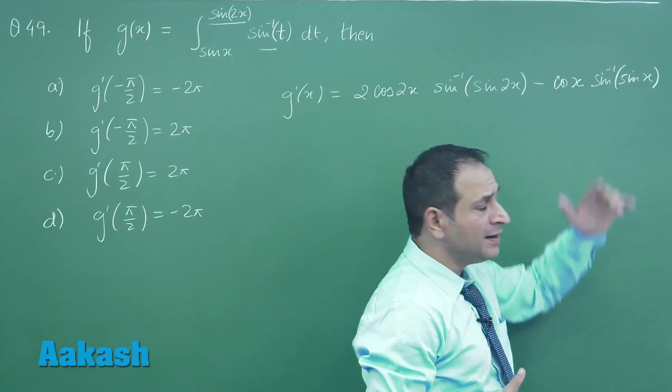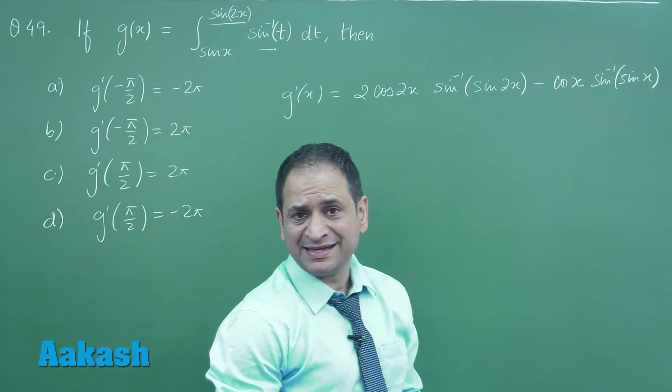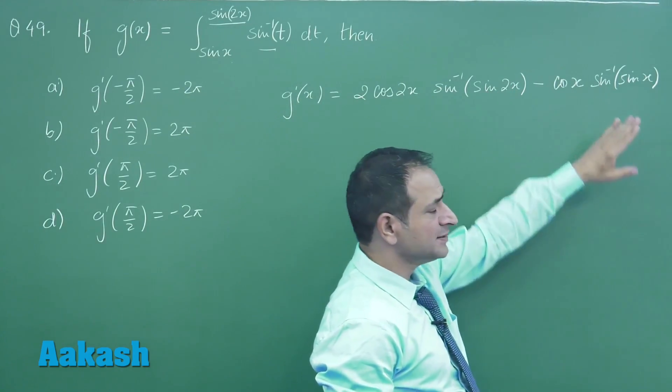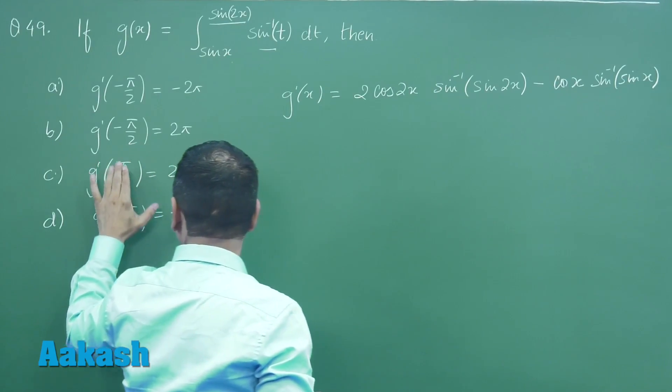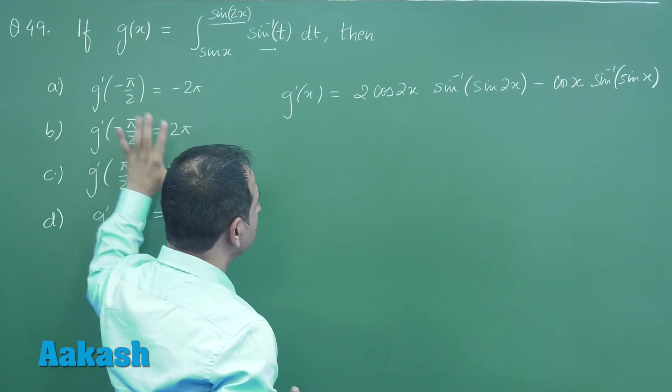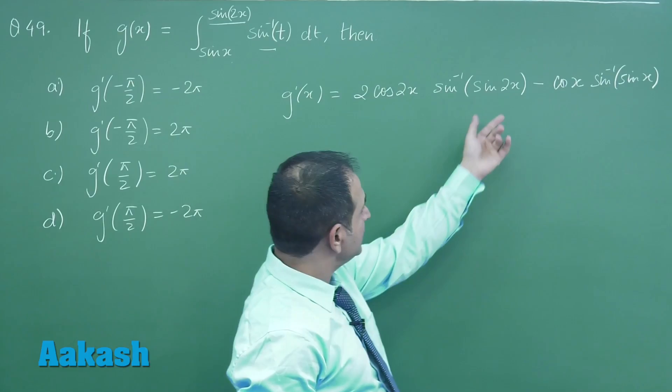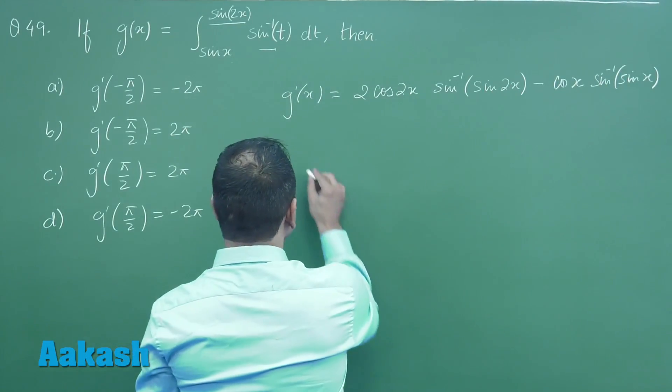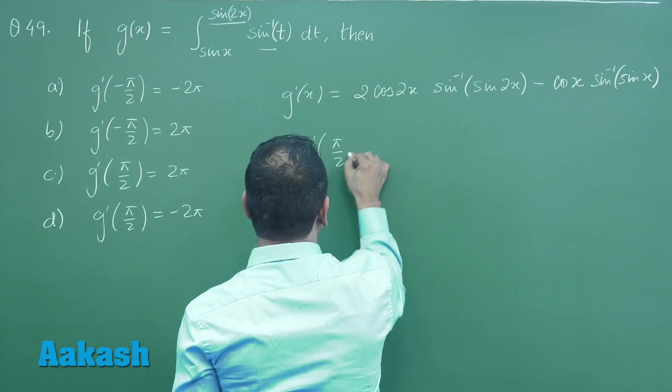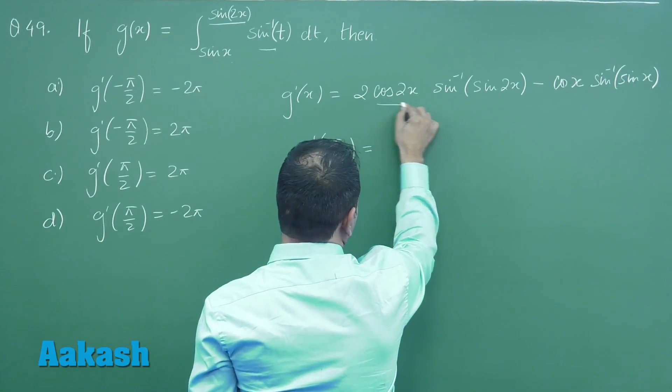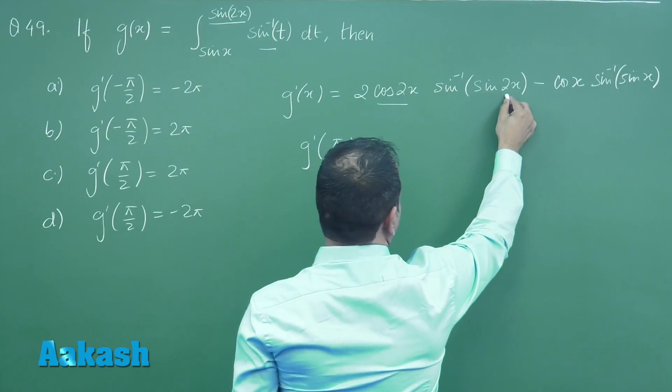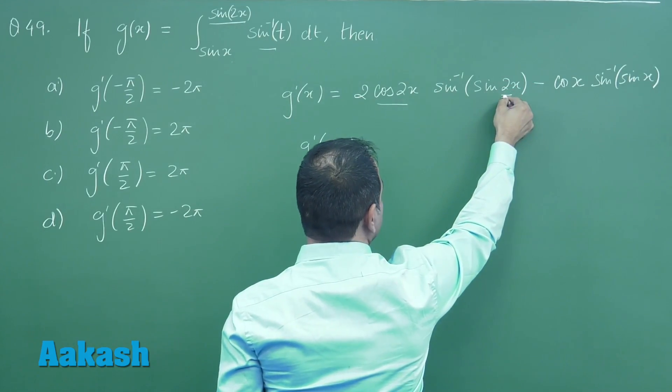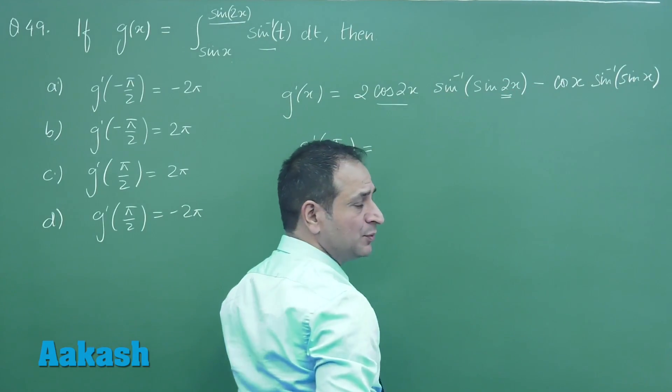Again you can't write this one as x, so it will be wrong to write this as 2x and this term as x because we have been asked the value at pi by 2 and minus pi by 2. At pi by 2, this will become pi, so we can't write this as 2x. By substituting pi by 2 here, you can see this will give you pi, and sin of pi is 0, and inverse of 0 is 0, so this will give you 0. Again pi by 2, this cos will become 0, so the value at pi by 2 is 0.